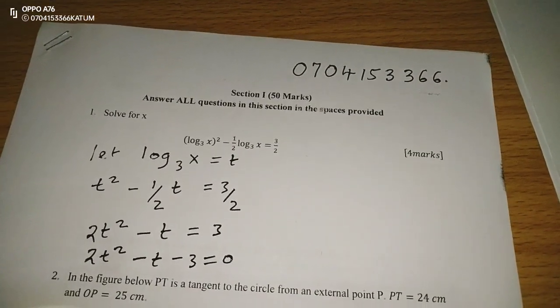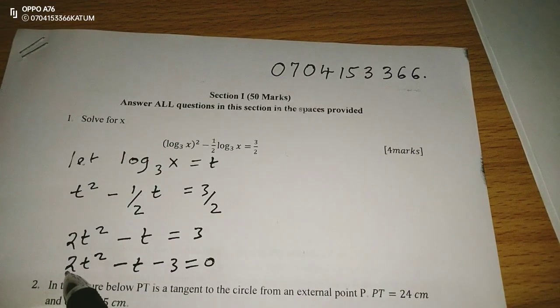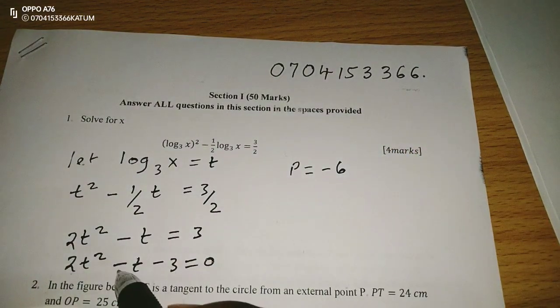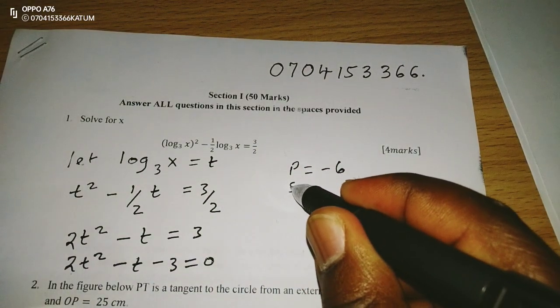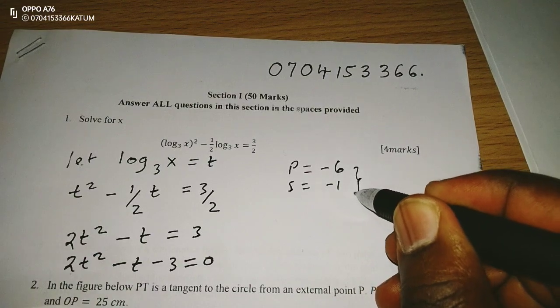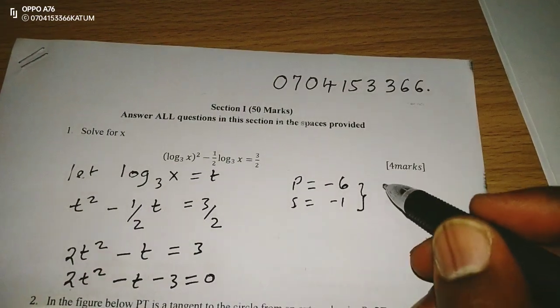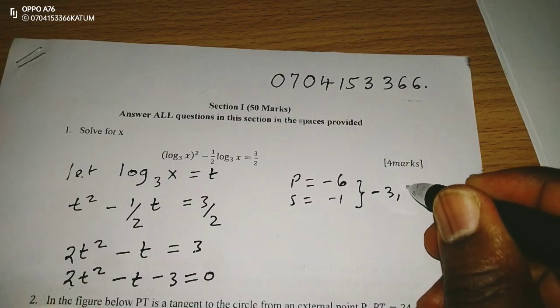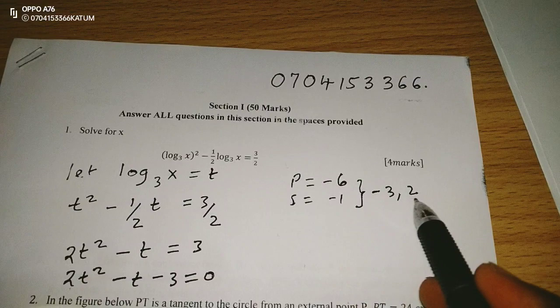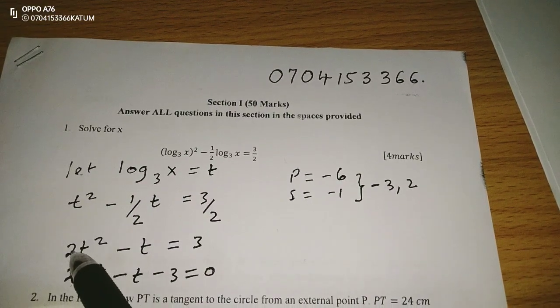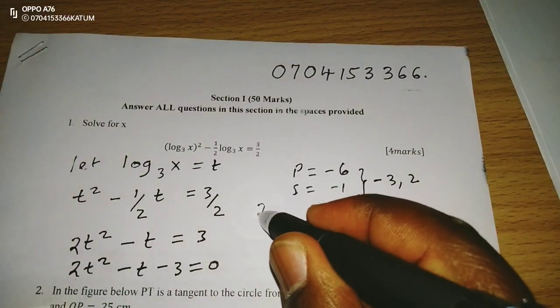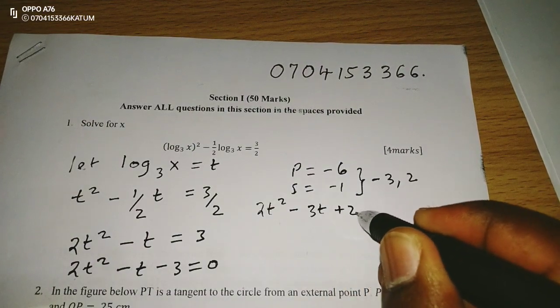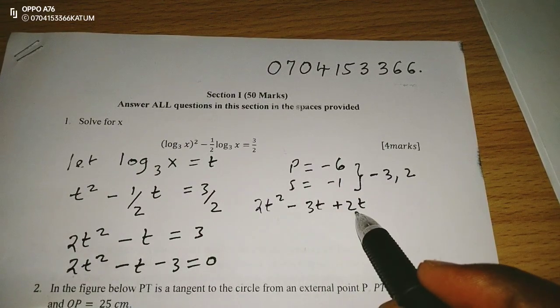We can solve the quadratic equation by having the factorization method. 2 times negative 3 gives us a product of negative 6. Then we need a sum of the value at b here, which is negative 1. So this means we are having two factors, which when multiplied is negative 6 and when added, negative 1. These are negative 3 and 2. So now we can factorize this part, whereby we begin with 2t squared minus 3t plus 2t.